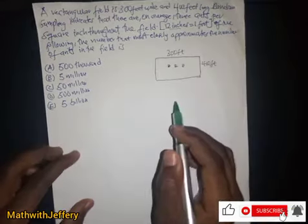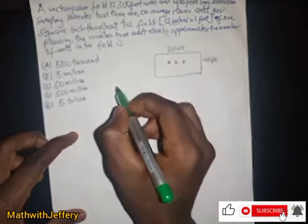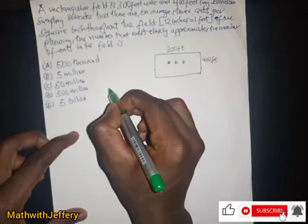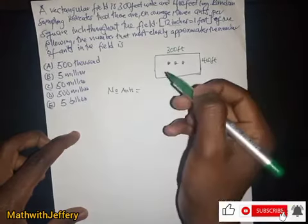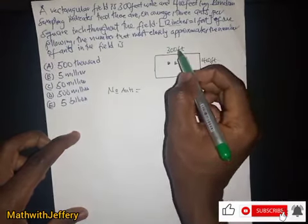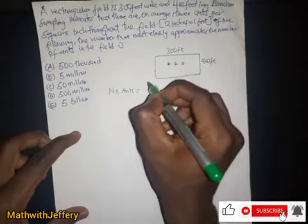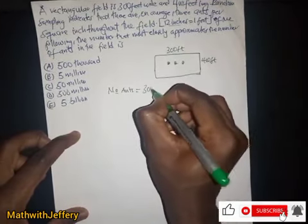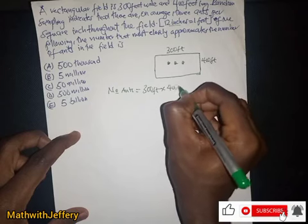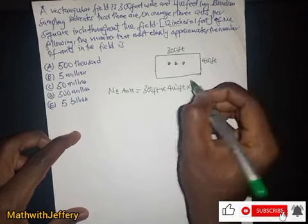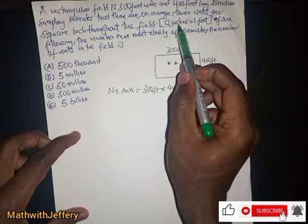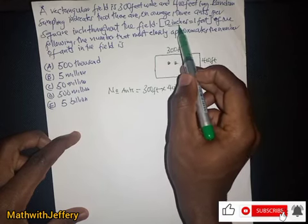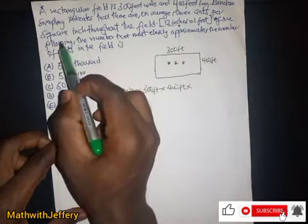To get the number of ants in the field, the number of ants will be given by the area of the rectangle: 300 feet multiplied by 400 feet. But then we also multiply by the unit conversion of 12 inches per foot.